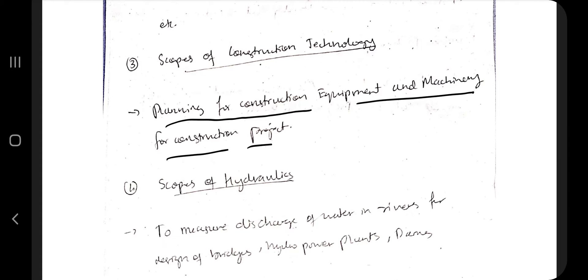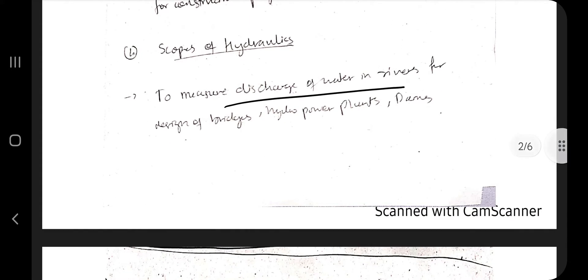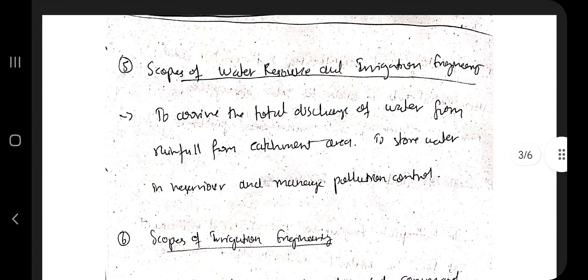Hydraulics has to do with waters like hydro power plants and dams. Water resource and irrigation engineering deals with the total discharge of water from various areas and from rainfall catchment areas.